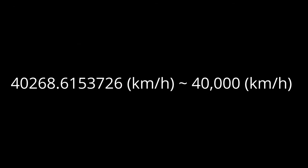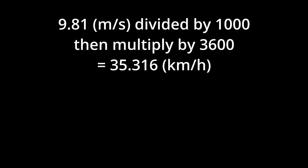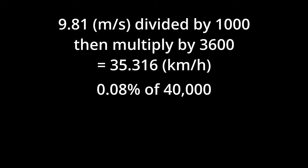Let's round down Earth's escape velocity to 40,000 kph to make things easier. Now let's also assume for this scenario that gravity is constant — which would mean escape velocity doesn't exist — but we'll disregard that and calculate how long it would take for gravity to negate 40,000 kph. Converting 9.81 meters per second gives us 35.316 kilometers per hour, which is about 0.08% of 40,000 kph — almost a thousandth. So it would take over a thousand hours to completely neutralize 40,000 kph, and that's assuming constant gravity. With gravity weakening over time it would take exponentially longer.